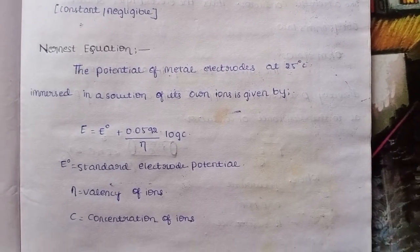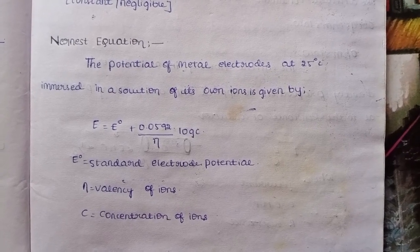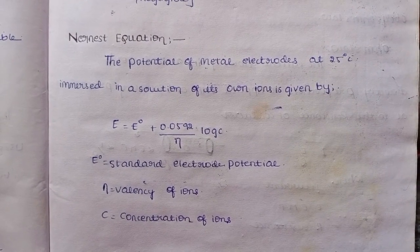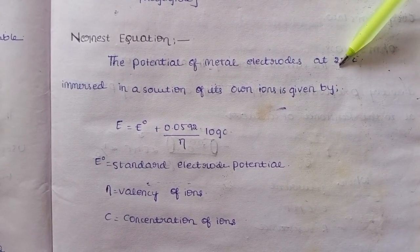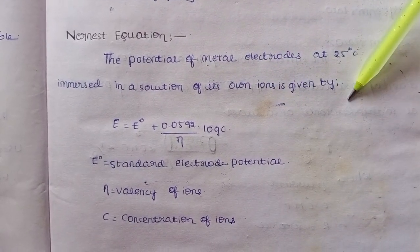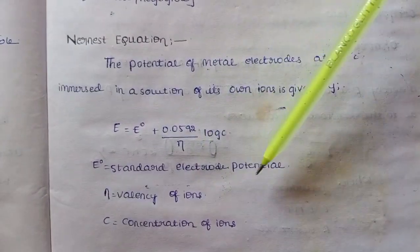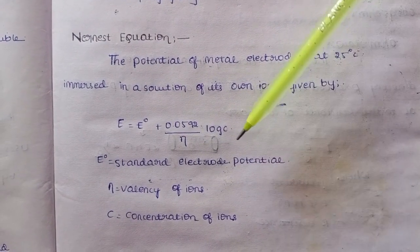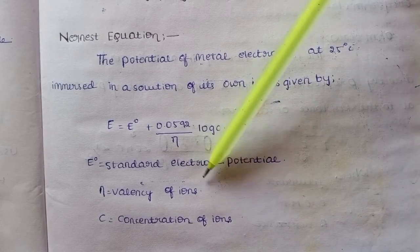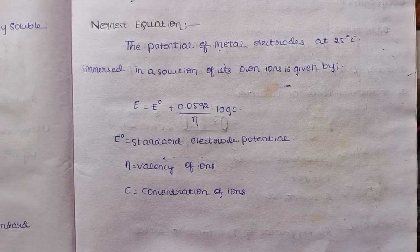Nernst equation - most important for two marks. What is Nernst equation? The potential of metal electrode at 25 degrees immersed in a solution of its own ion is given by: E = E° + 0.0592/n log C. E° is standard electrode potential, and n is the valency of ions. C is the concentration of ions.